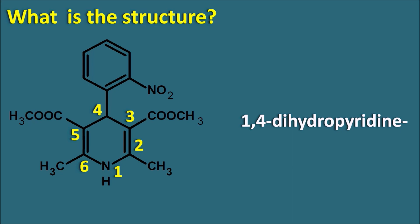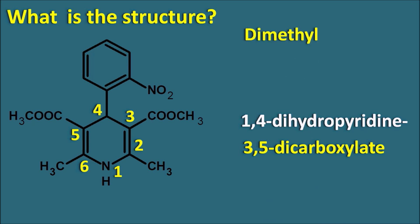This 1,4-dihydropyridine ring system has carboxylic acid groups forming esters at the third and fifth positions with methyl groups. So we can represent these esters as 3,5-dicarboxylate forming esters with methyl groups — represented as dimethyl at the start of the name. Nifedipine is therefore a dimethyl-1,4-dihydropyridine-3,5-dicarboxylate derivative. These esters are important for determining the duration and distribution of the drug. Nifedipine is a short-acting calcium channel blocker because of the methyl esters at the third and fifth positions. The structure also has methyl groups at the second and sixth positions, represented as 2,6-dimethyl.